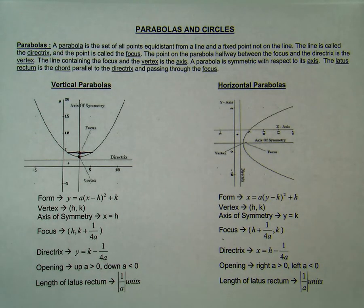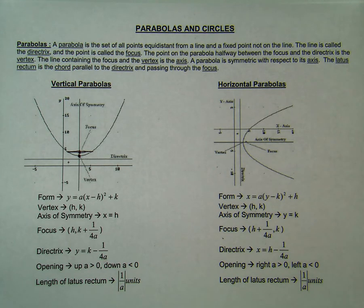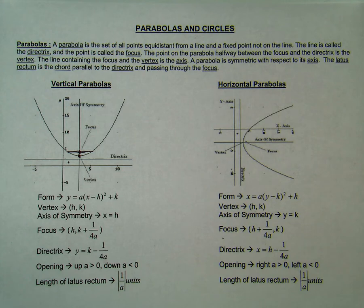Below are pictures of the vertical parabola and the horizontal parabola. They are very similar, yet one is up and down and the other is left and right. Please note the differences in the form, the vertex, the axis of symmetry, the focus, the directrix, the direction of opening, and the length of the latus rectum. You are responsible for knowing all of these different equations both for vertical parabolas and horizontal parabolas.